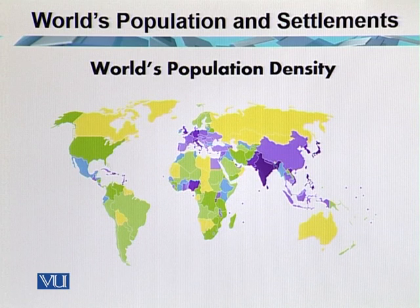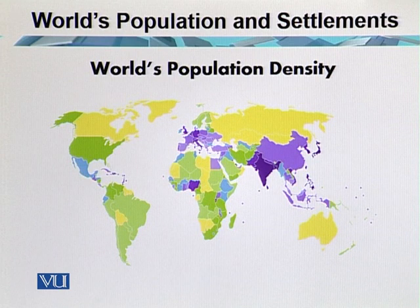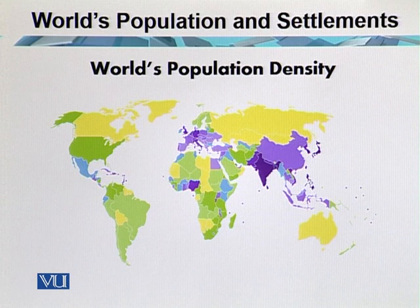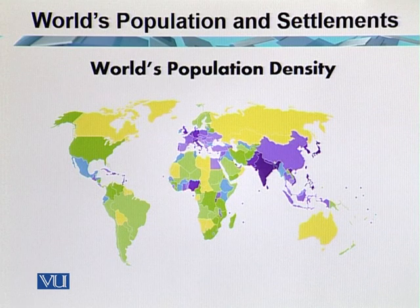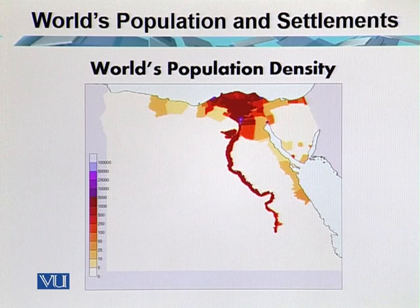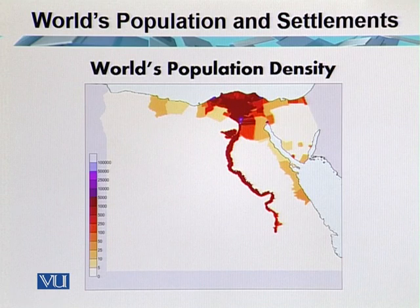Number two is physiological population density. It relates the total population of a country or region to the area of cultivated land it contains. It is defined as the number of people per unit area of agriculturally productive land. This map of Egypt shows that the darker shade represents the densely populated area of the country, which is actually the River Nile area of Egypt.